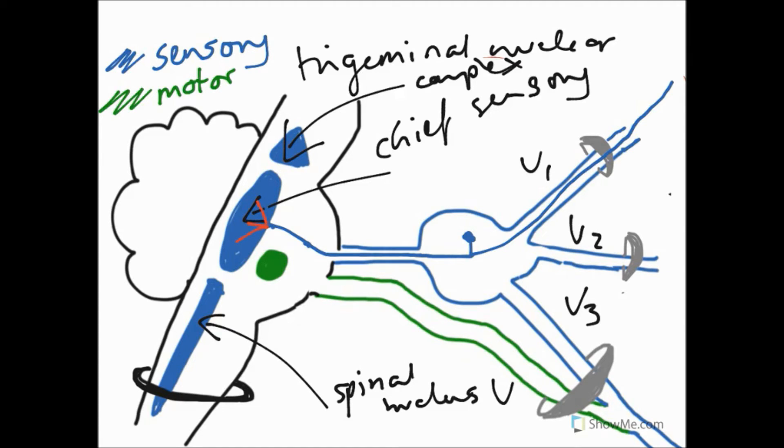Or we could have information that was coming to synapse on our spinal nucleus five, which would be information relating to pain, temperature, crude touch and pressure. And this loops down. So this, I'm drawing it in red, maybe I should draw it in blue actually. So it's going to loop down like this.